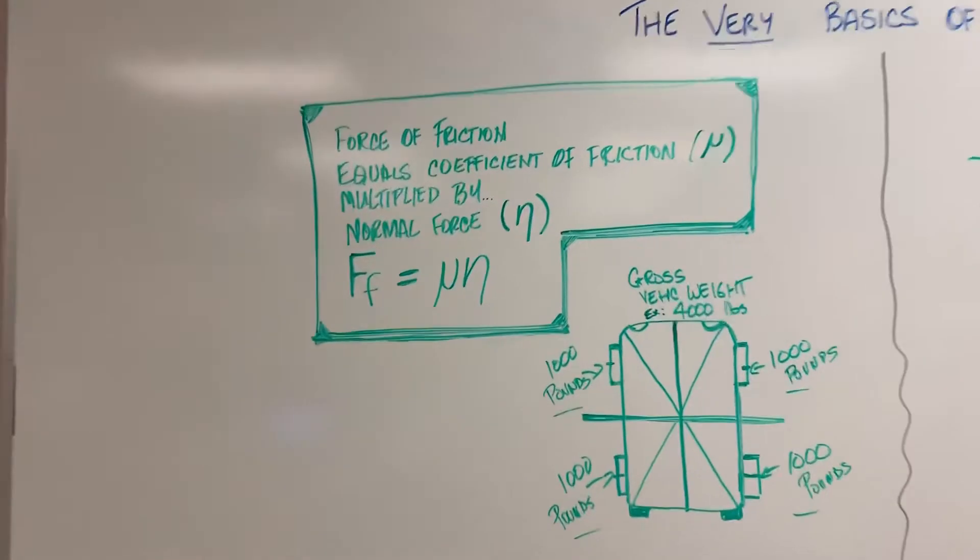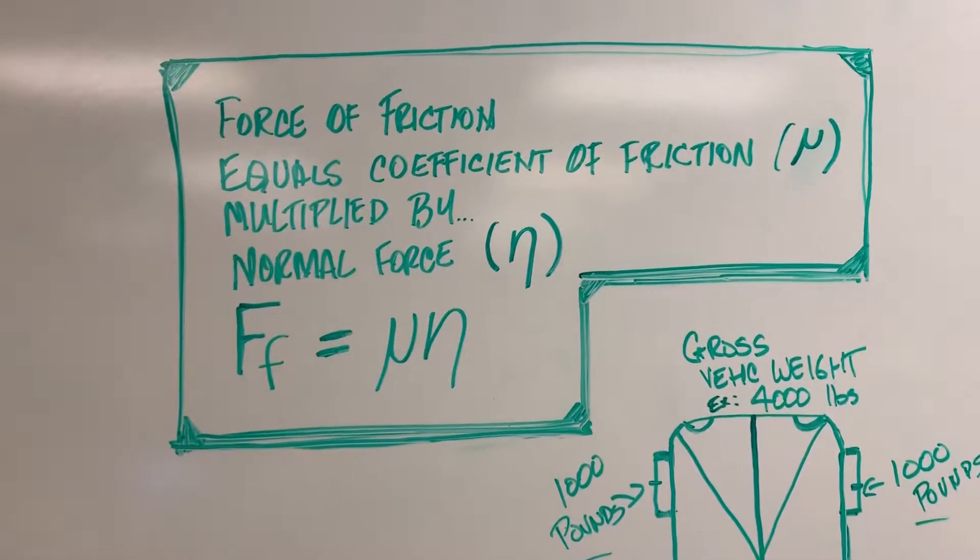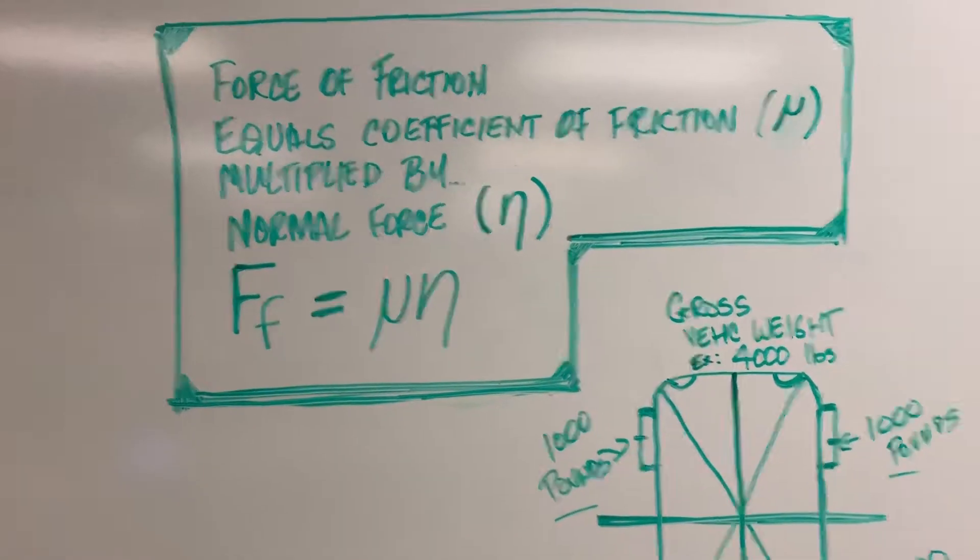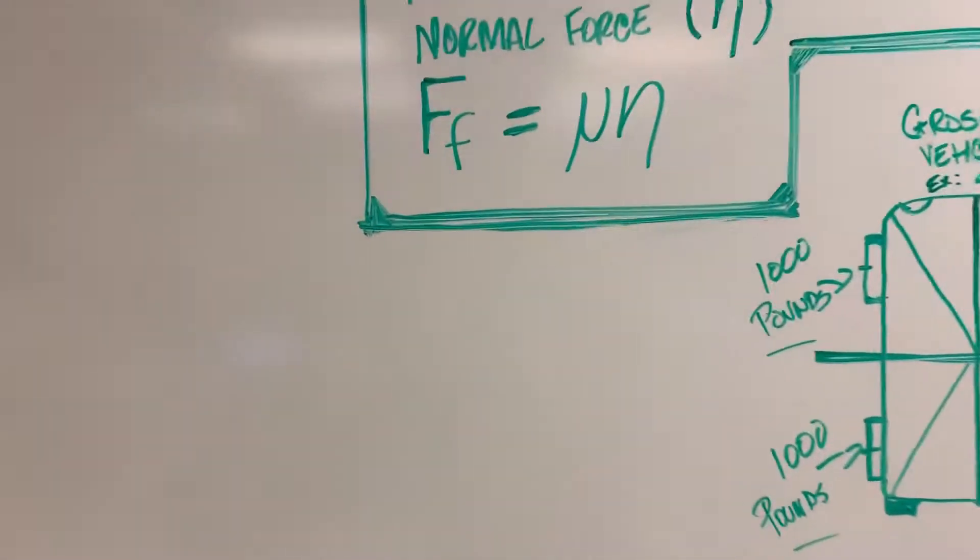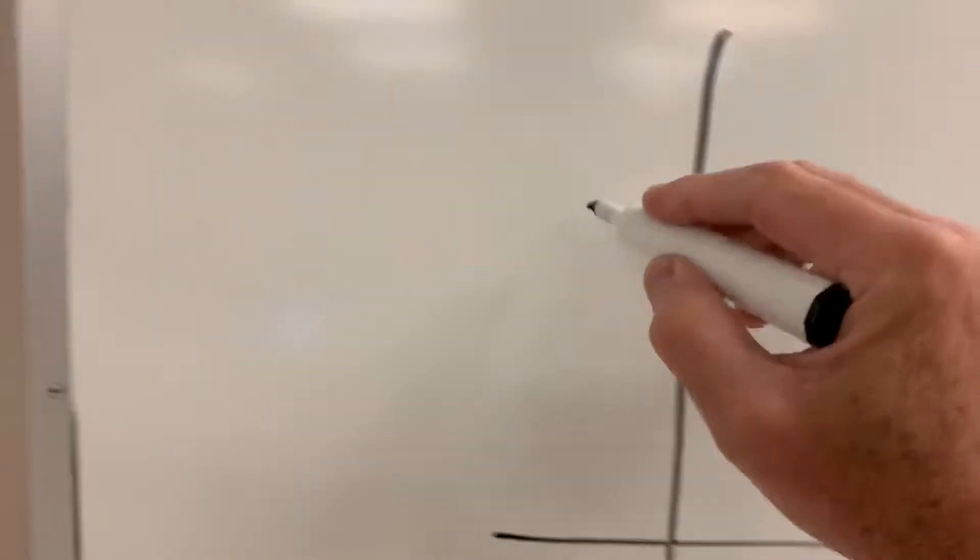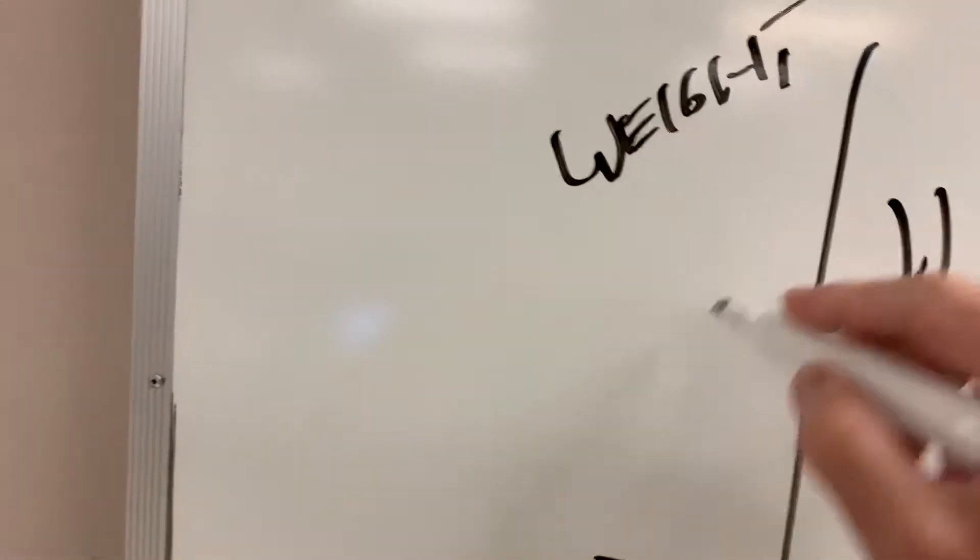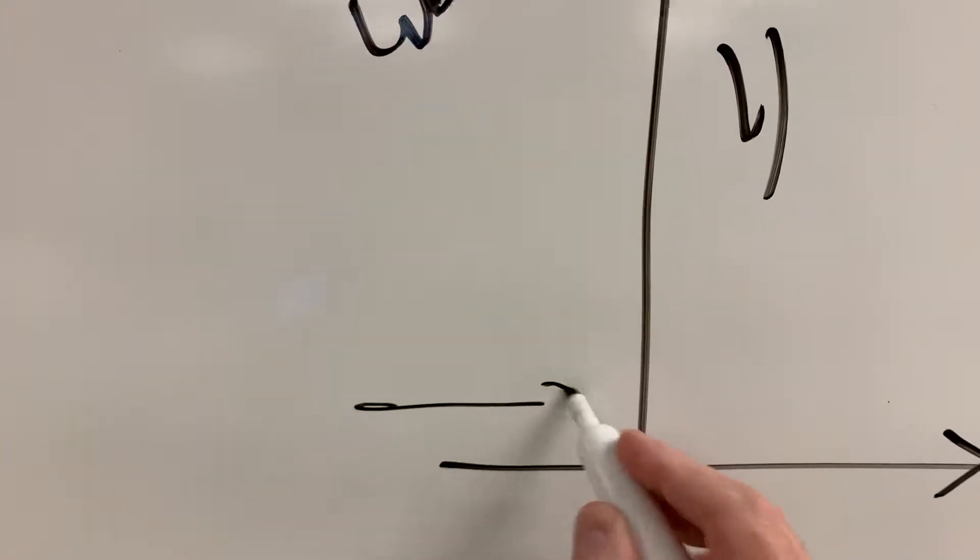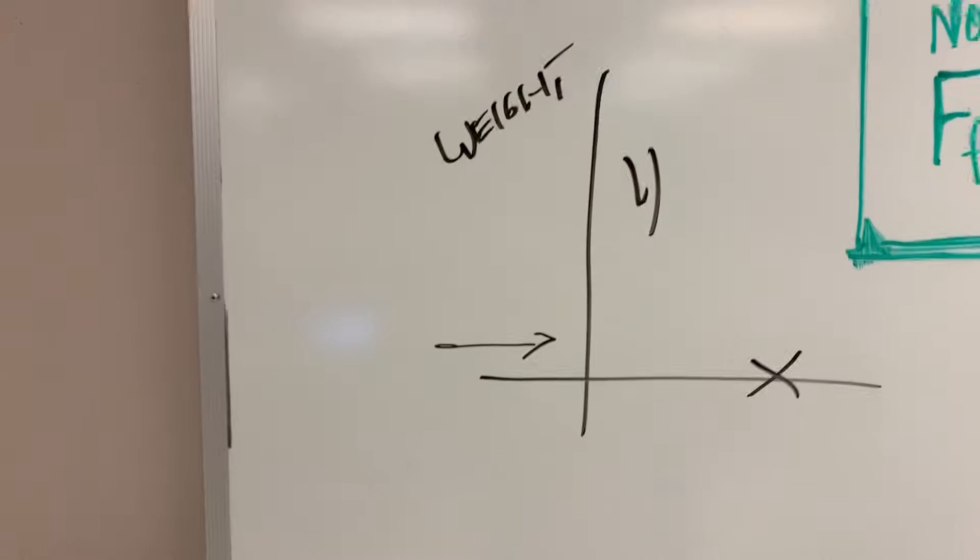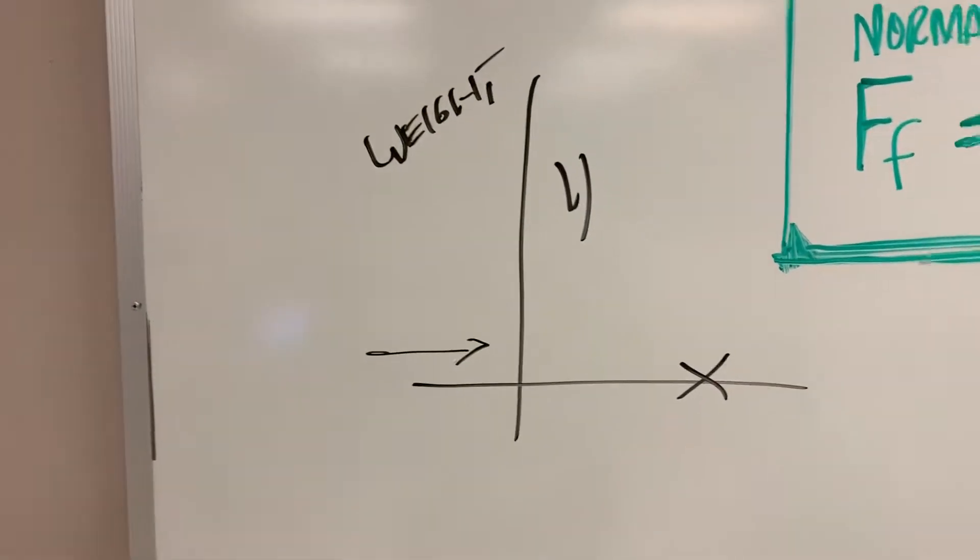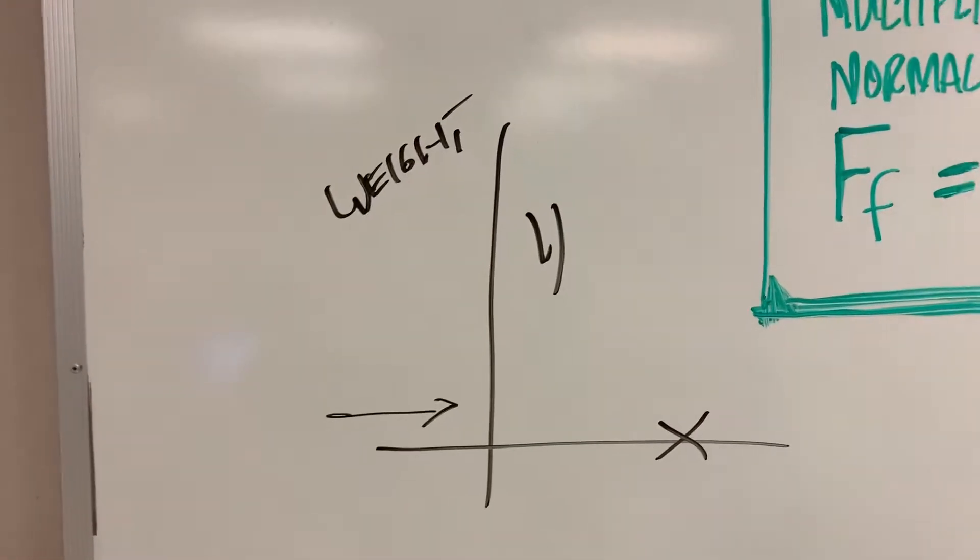Let's look at this first part of the equation. The force of friction equals the coefficient of friction multiplied by the normal force. That means when you have a y-axis and an x-axis, if you add weight here, the force required to move that weight equalizes regardless of the amount of stuff you have on the ground.